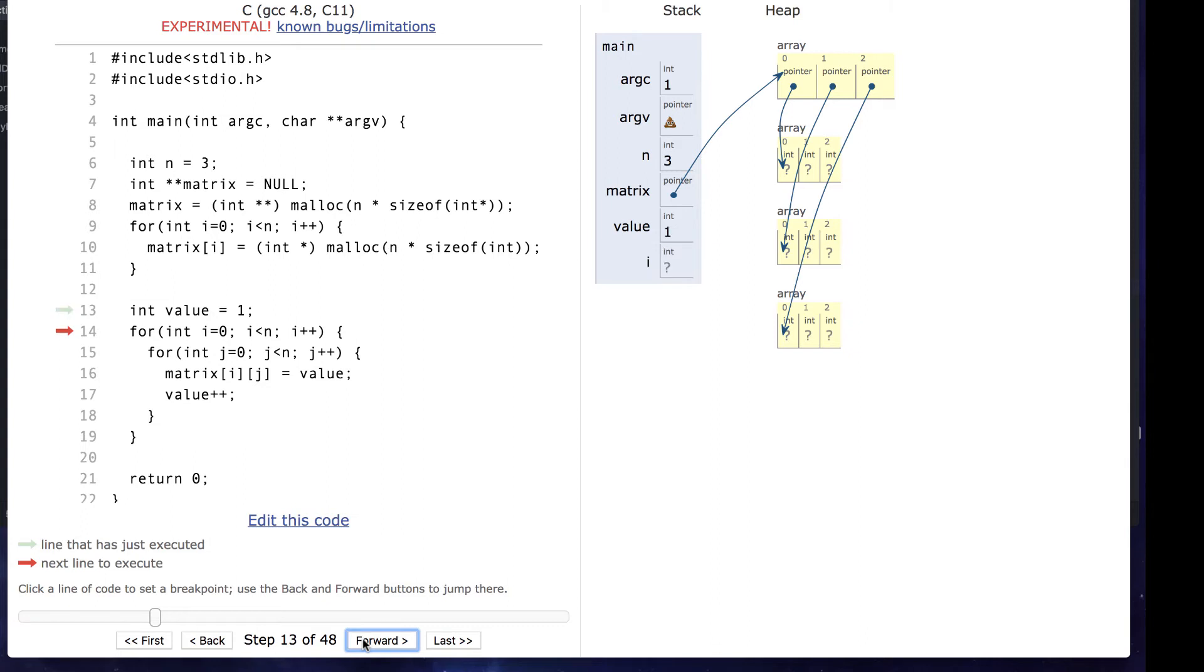Now we can iterate for each row, each column in that row, for the second row, and the third.